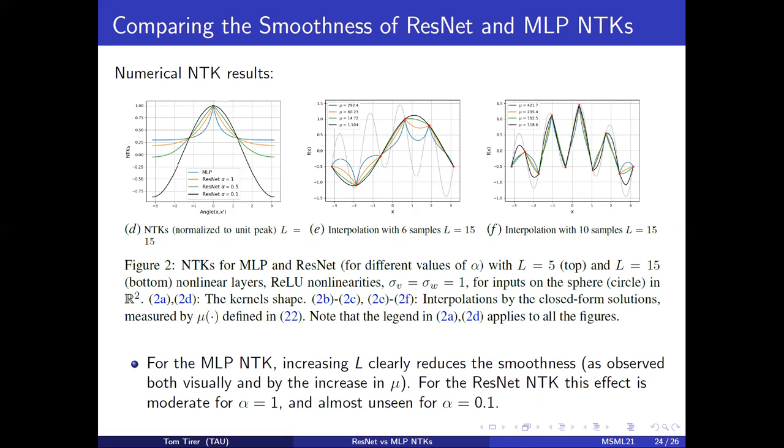For the ResNet, this effect is moderate for alpha equals one and almost unseen for alpha equals 0.1. Again, the quantitative measure agrees with the visual results.